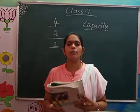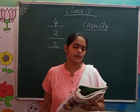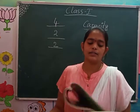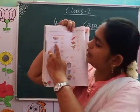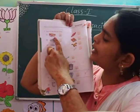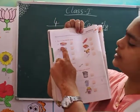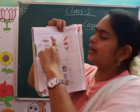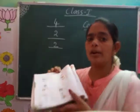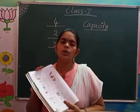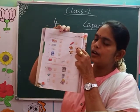And turn the page to page number 46 — there is a worksheet. Tick the heavier ones. Box or eraser? Box is heavier — tick on the box. Box or chocolate? Box is heavier than the chocolate — tick on the box. Eraser or book? Book is heavier than the eraser — tick on the book.